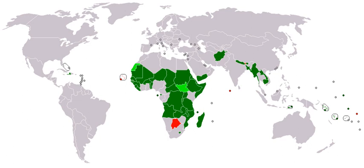Developing countries include, in decreasing order of economic growth or size of the capital market: newly industrialized countries, emerging markets, frontier markets, and least developed countries. Developing countries can also be categorized by geography, including small island developing states and landlocked developing countries.